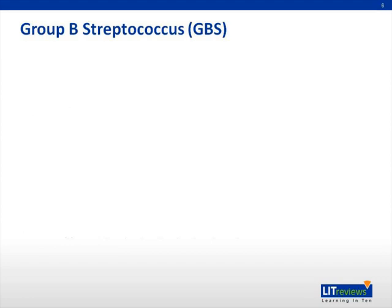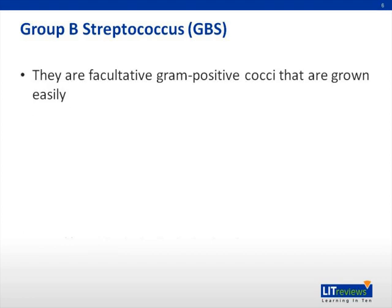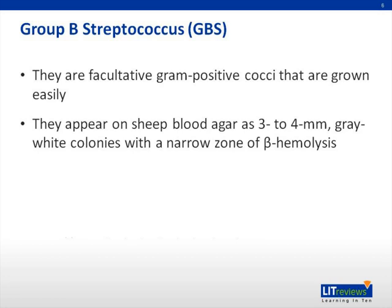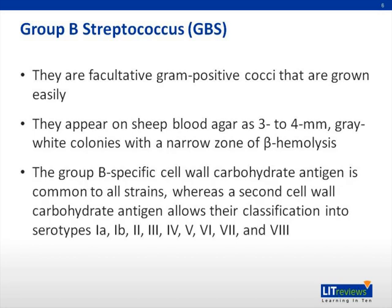Group B streptococci are facultative gram-positive cocci that are grown easily. They appear on sheep blood agar as three to four millimeter gray-white colonies with a narrow zone of beta hemolysis. The group B specific cell wall carbohydrate antigen is common to all strains, whereas the capsular polysaccharide antigen allows their classification into serotypes 1A, 1B, 2, 3, 4, 5, 6, 7, and 8.